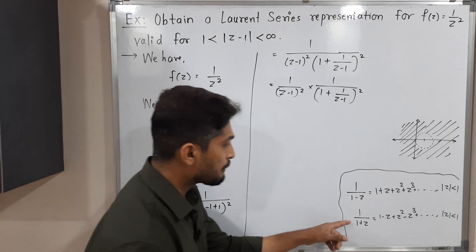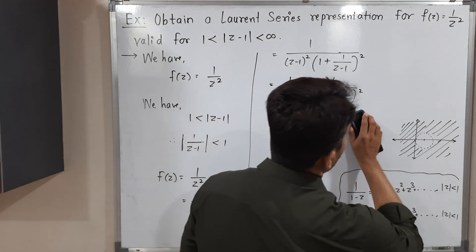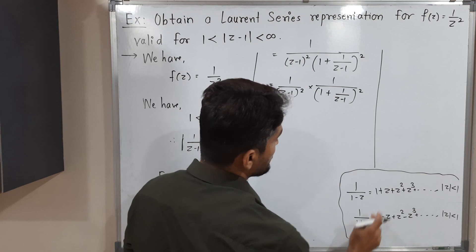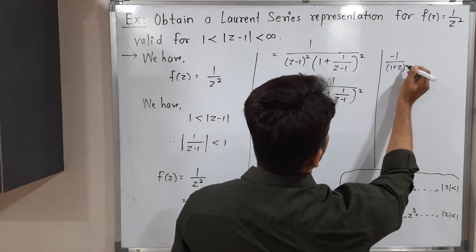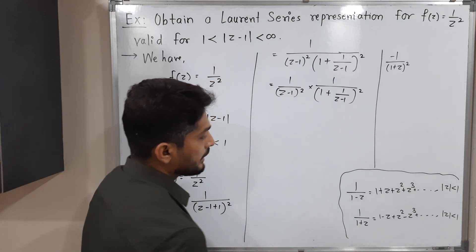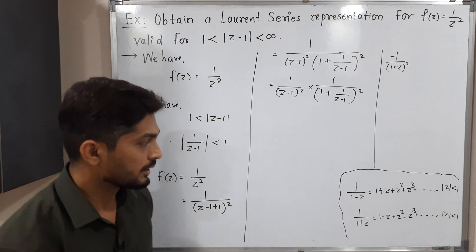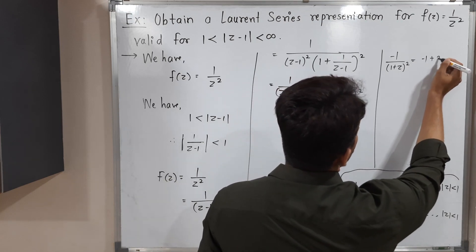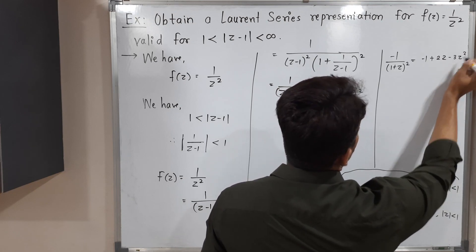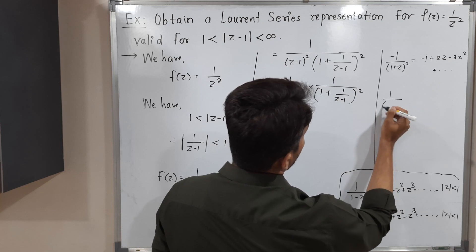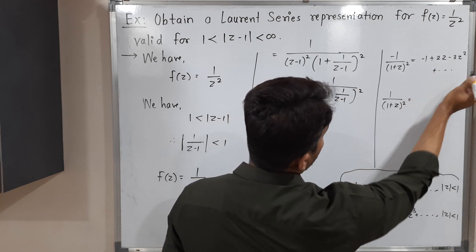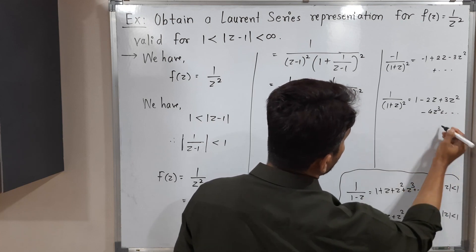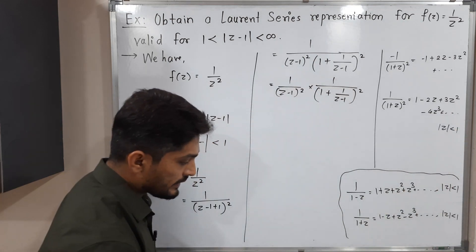To handle the square, we use the derivative trick. Starting from 1/(1+z) = 1 - z + z² - z³ + ..., we differentiate both sides. The derivative of 1/(1+z) is -1/(1+z)². Differentiating the right-hand side: derivative of 1 is 0, of z is 1 (sign changes to -1), of z² is 2z, of z³ is 3z², and so on. Multiplying both sides by -1 gives: 1/(1+z)² = 1 - 2z + 3z² - 4z³ + ..., valid for |z| < 1.